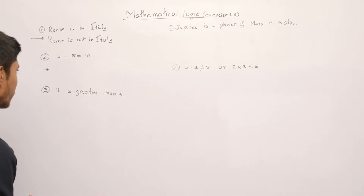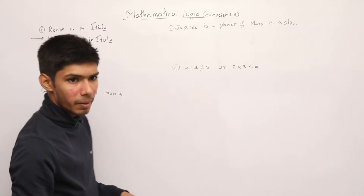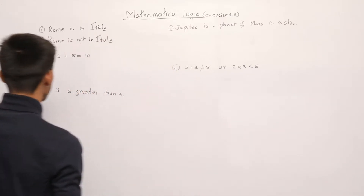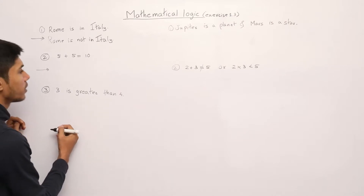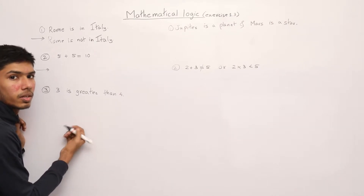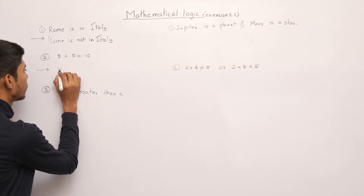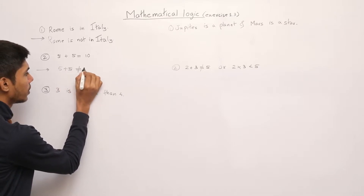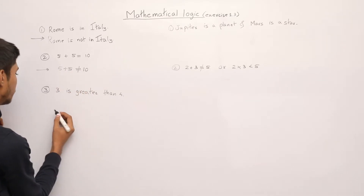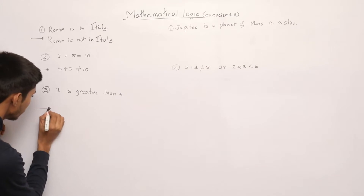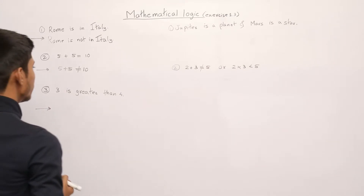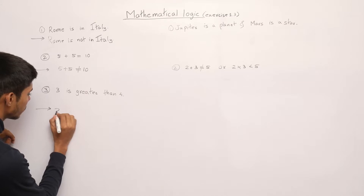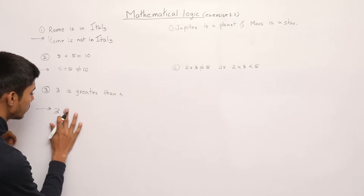The second statement in mathematical form is '5 plus 5 is equal to 10', so the negation of this statement is '5 plus 5 is not equal to 10'. That is the negation of the second statement.